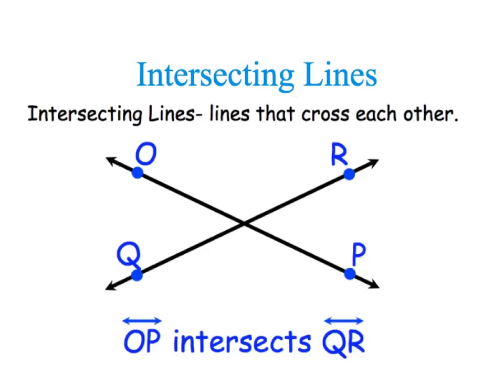Now in this example, we have intersecting lines. Intersecting lines are lines that do cross each other. So you can see that line OP, I'm just kind of underlining it here, will cross right here.